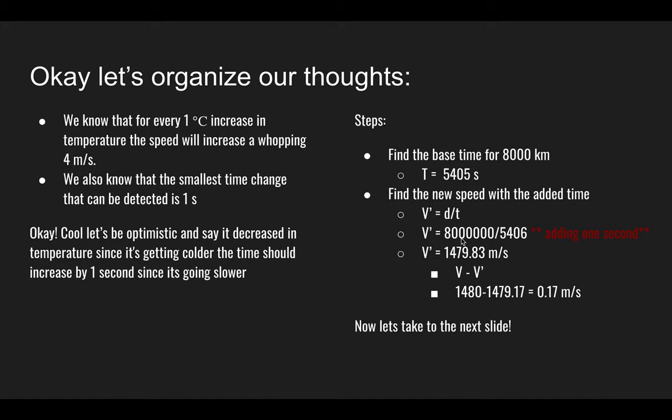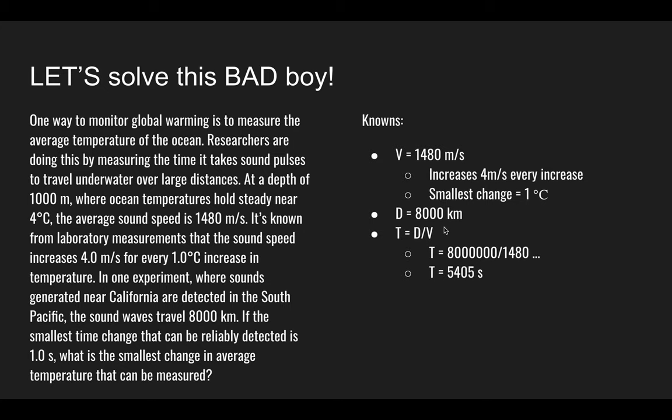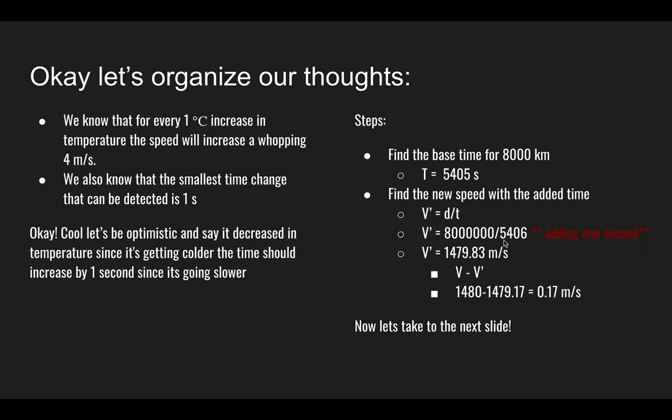From 5405, we get 5406. We're adding the second, and we're just doing the equation from this slide all over again. Our new velocity V prime is 1479.83 meters per second, so a little bit slower. To find the change, you just subtract the old one from the new one, and you get the change in velocity, which is 0.17 meters per second.